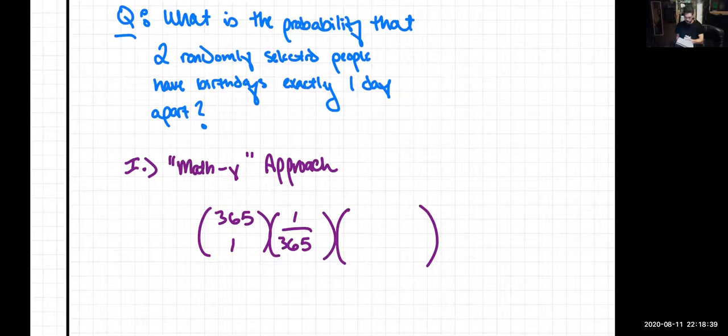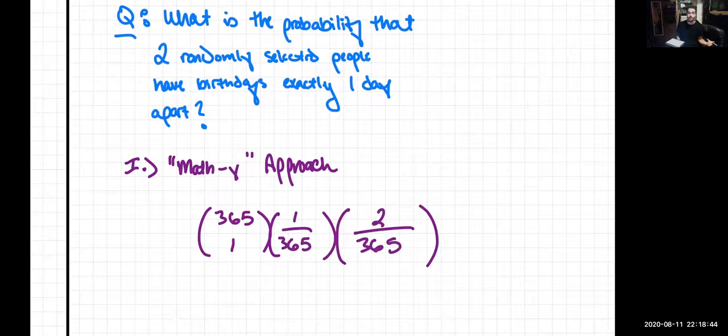So that means we have our choice of two out of 365 possible days. So 365 choose one happens to be 365. 365 times one over 365 is one, and one times two over 365 is two over 365.